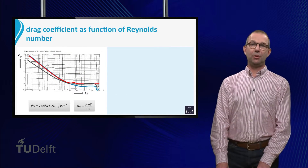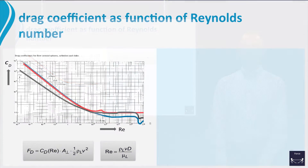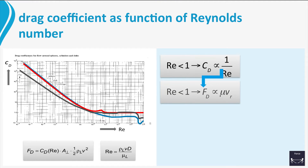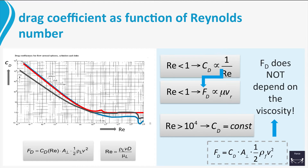For small Reynolds numbers, the drag coefficient is inversely proportional to the Reynolds number. If we use this in the drag force, we find that the drag does not depend on the density of the fluid — it is linear in the velocity as well as the viscosity of the fluid. For high Reynolds numbers, the drag coefficient is constant, and thus the drag force does not depend on the viscosity. This may seem surprising, but it is a consequence of turbulence.